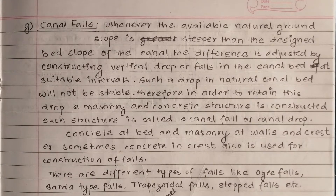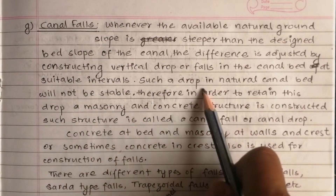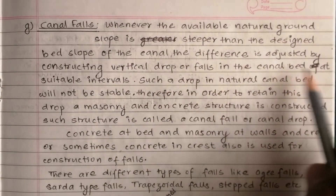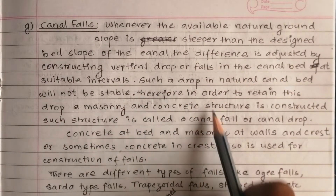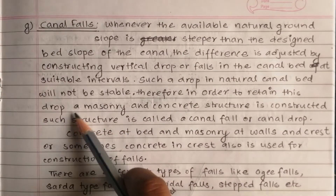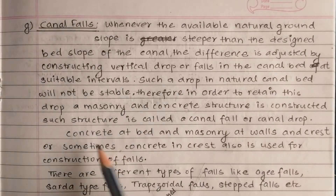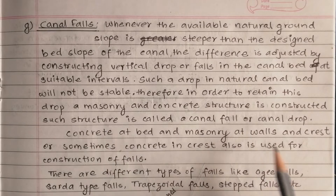The difference is adjusted by constructing a vertical drop. Therefore, in order to retain this drop, a masonry and concrete structure is constructed in the canal. This is the canal fall, also called the canal drop.